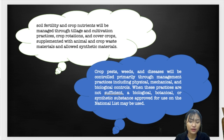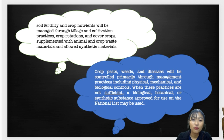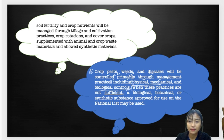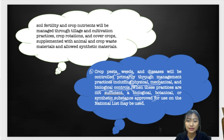Key features under crop standards: soil fertility and crop nutrients will be managed through tillage and cultivation practices, crop rotations, and cover crops, supplemented with animal and crop waste materials and allowed synthetic materials. Crop pests, weeds, and diseases will be controlled primarily through physical, mechanical, and biological control methods. When these are insufficient, biological, botanical, or synthetic substances approved on the national list may be used.